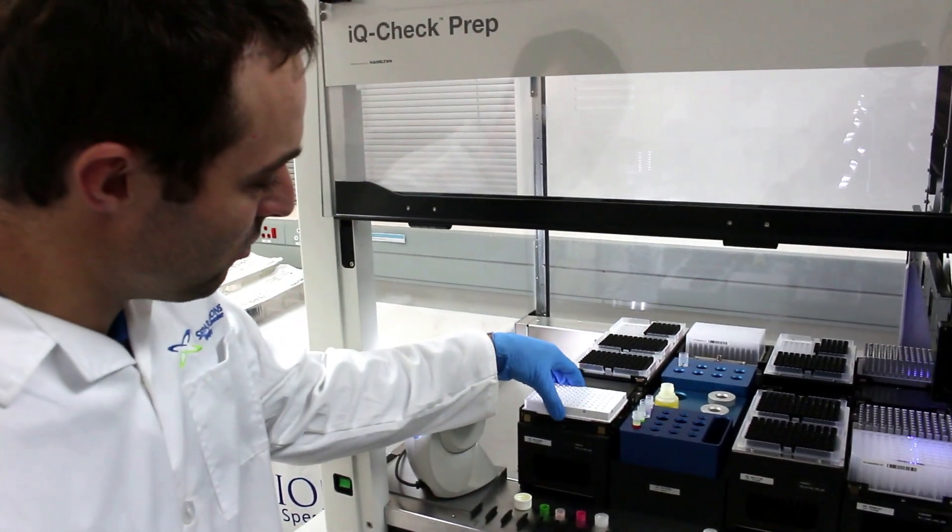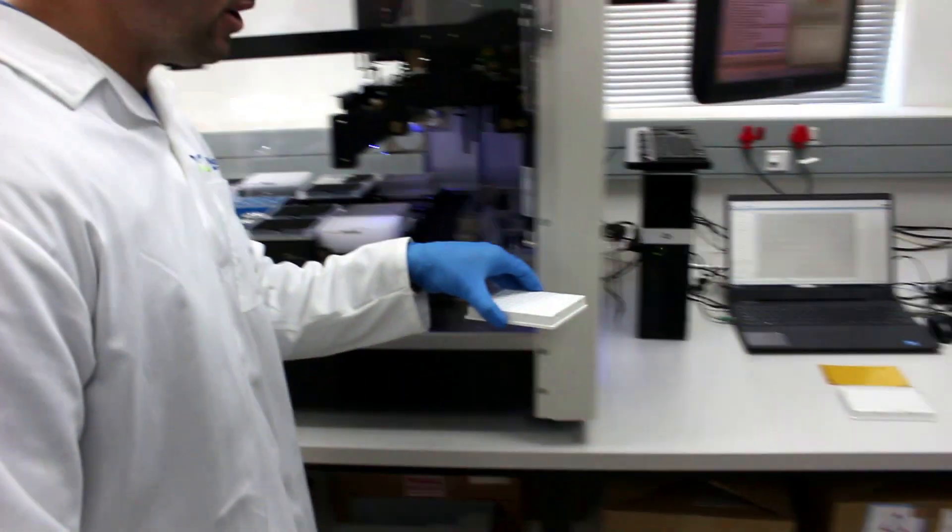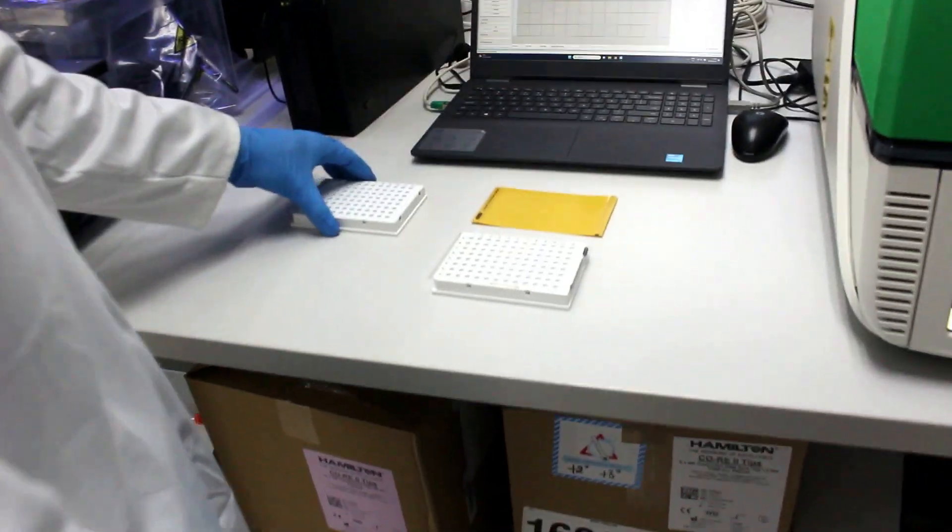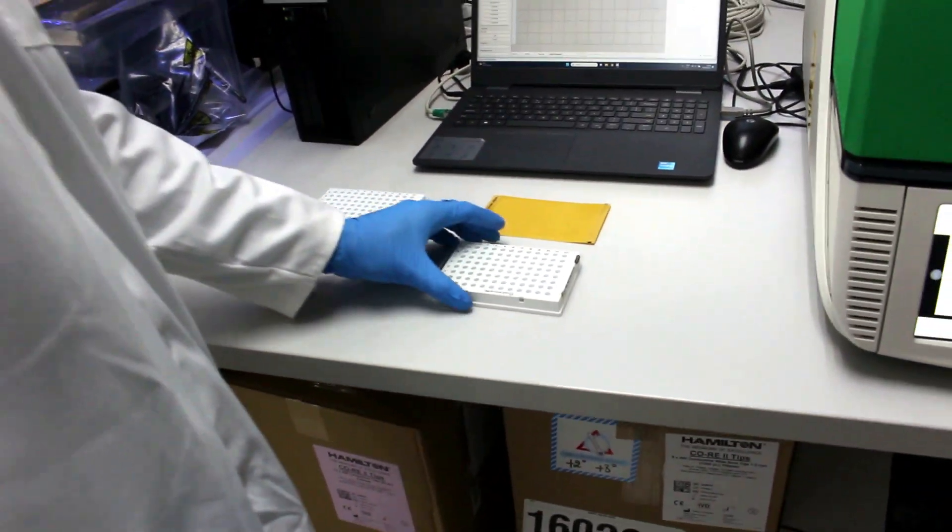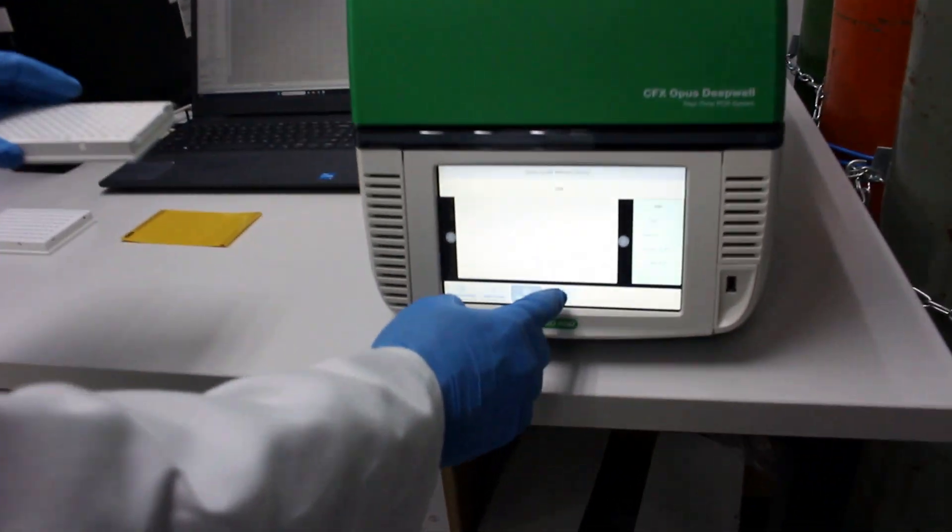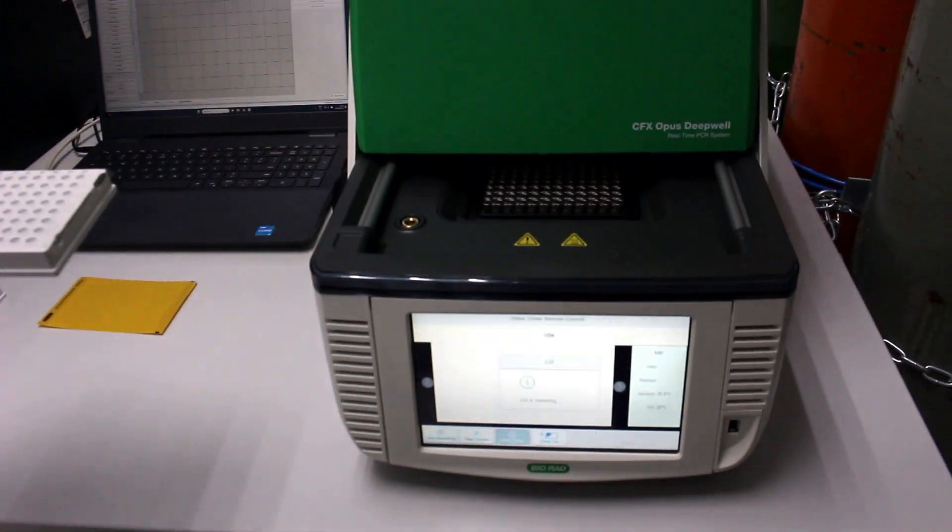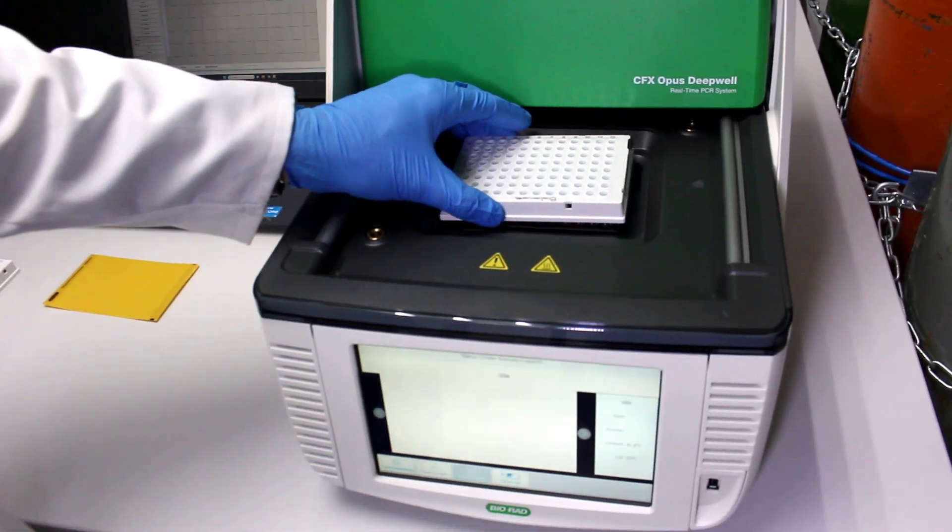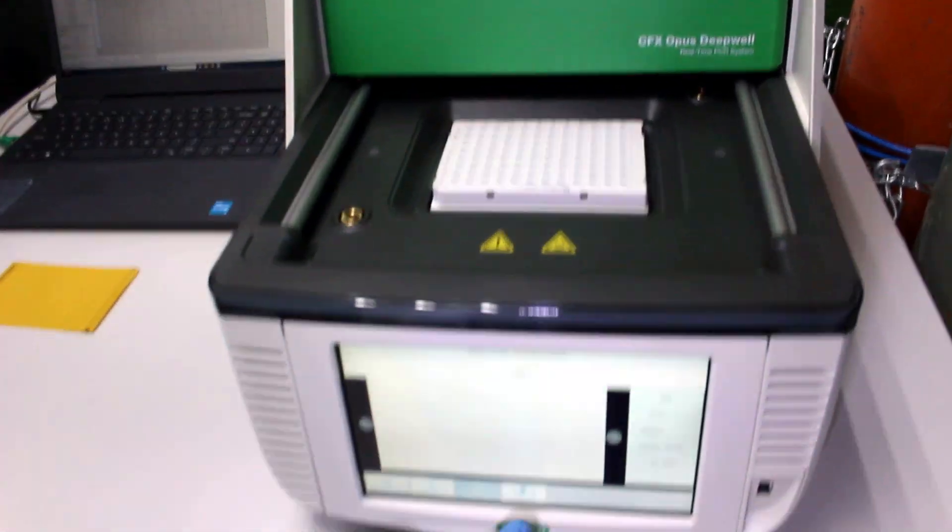The PCR plate is removed from the robot and moved over to the bench, where it is sealed with a sealing film. Once we have sealed the plate, the lid of the CFX Opus is opened. The PCR plate is placed into the Opus, and then we close the lid.